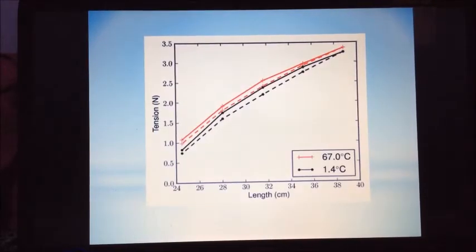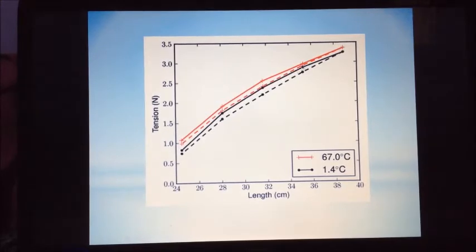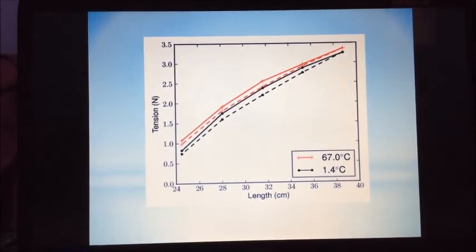These are the gathered data represented by a graph. The solid line represents the stretching of the rubber band, and the dashed line represents the relaxation of the rubber band. The red color signifies that these data are under 67 degrees Celsius, and the black ones are under 1.4 degrees Celsius. This graph shows that a change in length, an increase in length, will result in an increase in tension. In addition, this also shows that a higher temperature will give a higher tension.